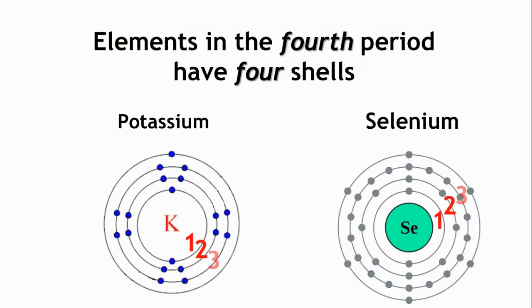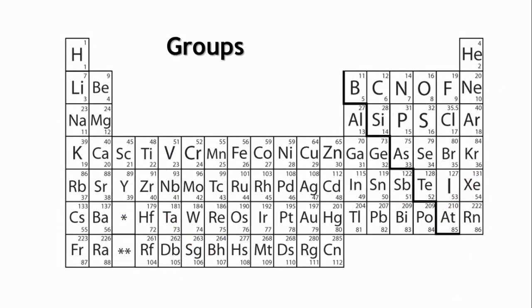The columns going down, from top to bottom, are the groups. Elements in the same group also have something in common. Elements in the same group have the same number of electrons in their outermost shell. The electrons in the outer shell are called the valence electrons.